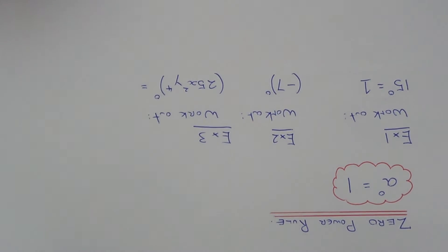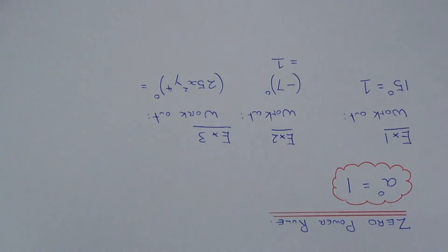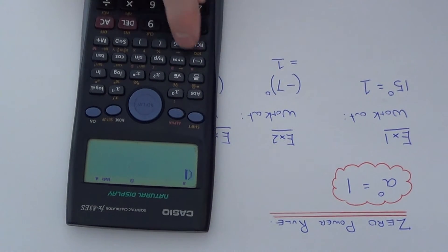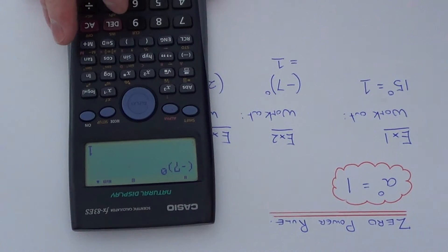So let's look at example two. This time you've got minus seven to the power of zero, so again just apply the power rule at the top. This should give us an answer of one. Again let's just check this on your calculator, so we've got minus seven to the power of zero, which again gives you one.